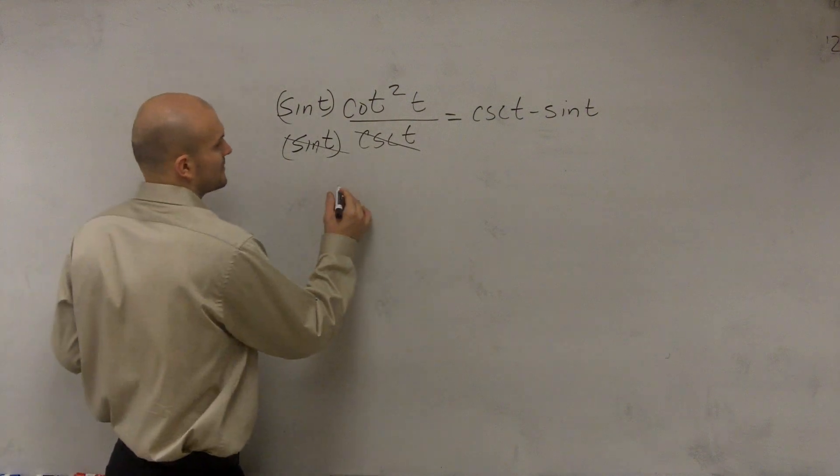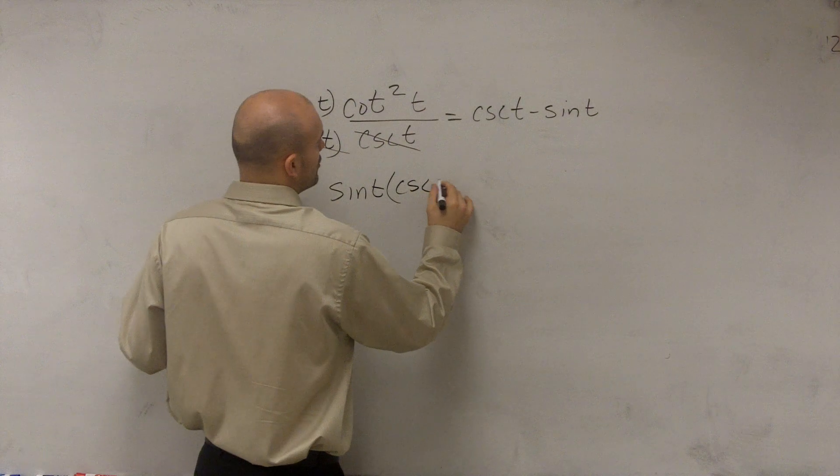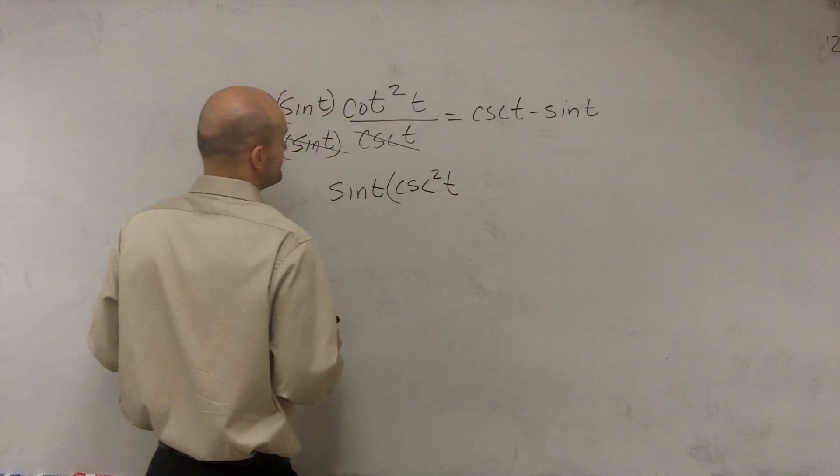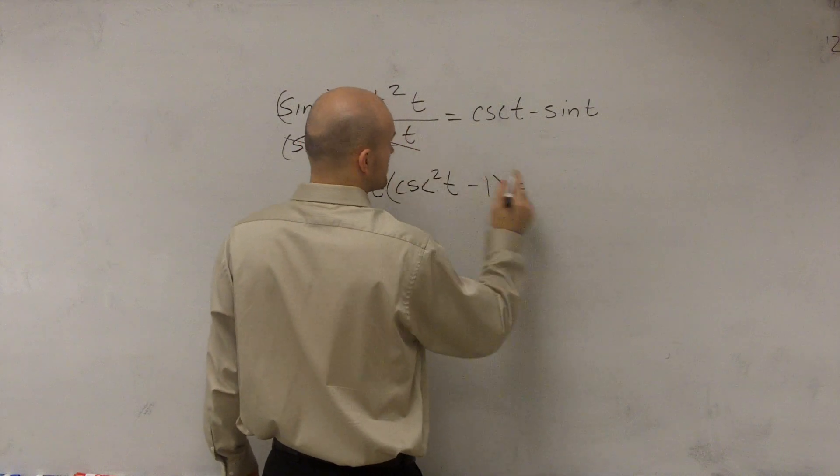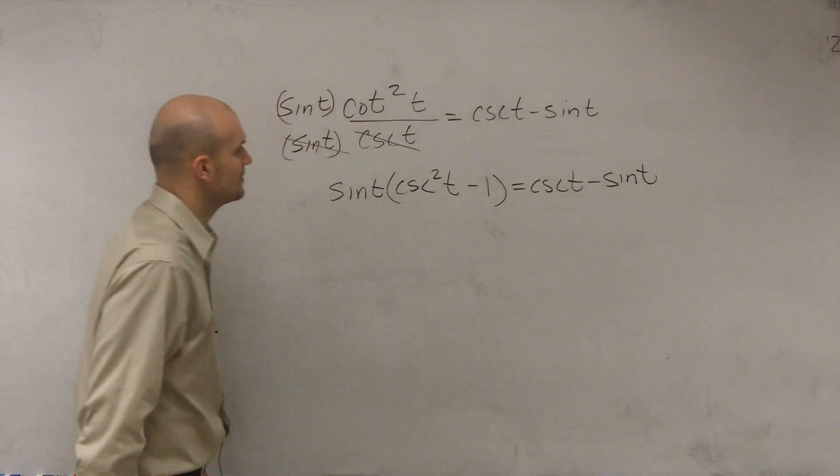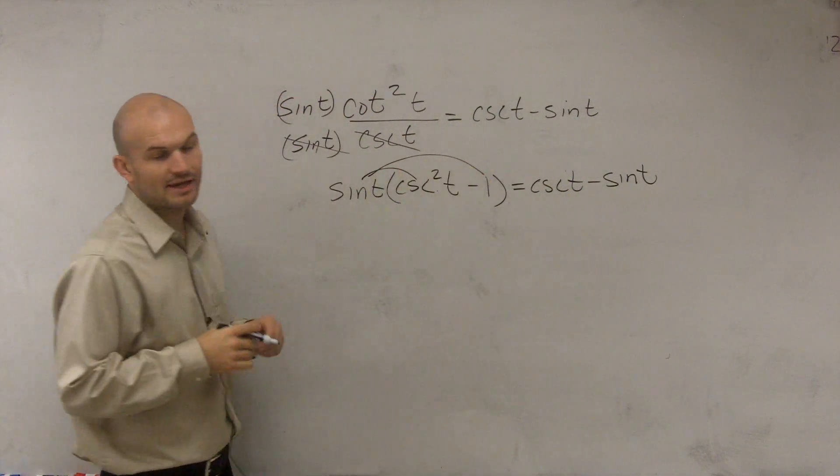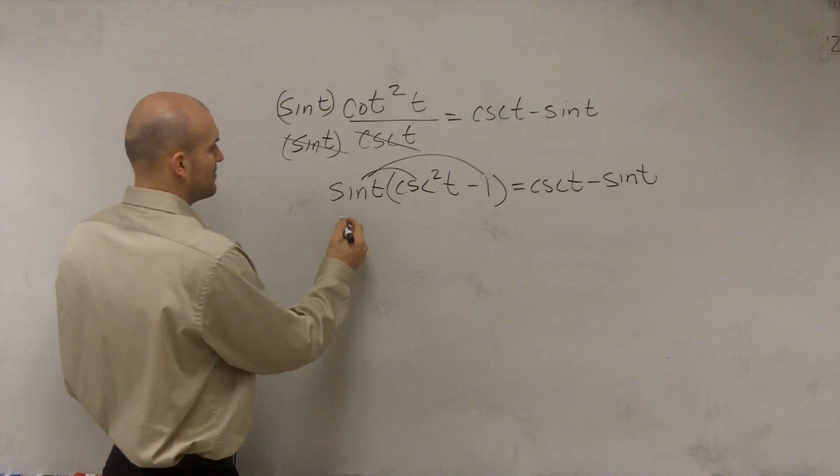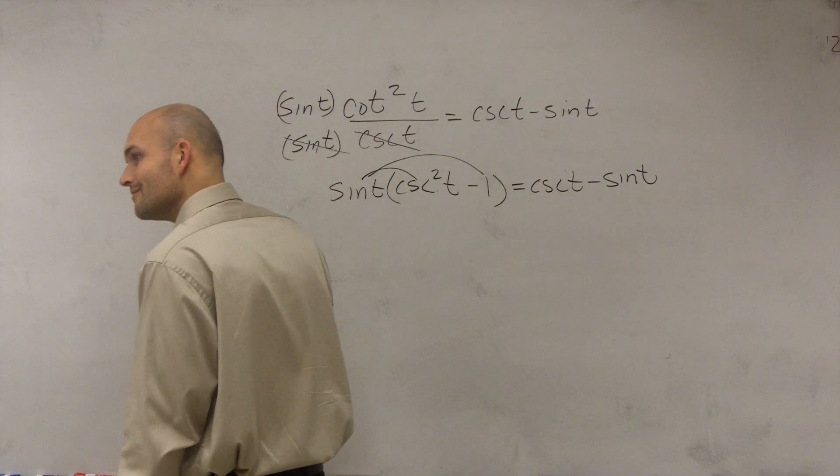Yes? OK. So you have sine of t times cosecant squared of t minus 1 equals cosecant t minus sine of t. All right, now you can apply Pythagorean identity or the distributive property. What did you say? I can't see. I know. That's why I asked you to move to a different spot.